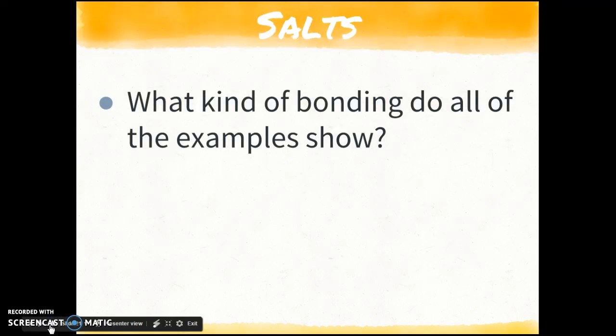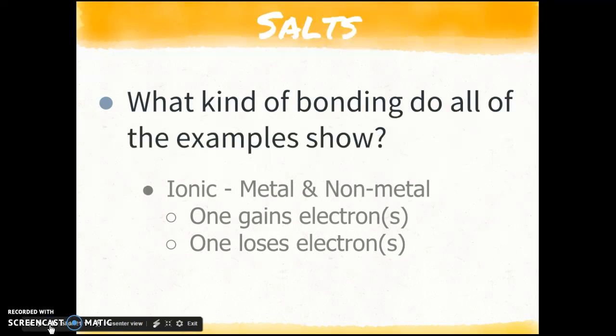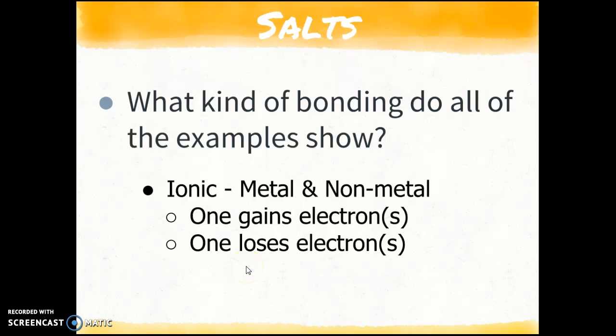So we already talked about what kind of bonding do all of the salts show? Ionic, you have a metal and a nonmetal, one's going to gain electrons, and one will lose electrons. If you have any questions, I've added the comparison of acids and bases to the sheet, the study sheet that you had gotten at the beginning of the year, you can find the answers on the class website. I also will be giving you some extra things to practice if you need it.